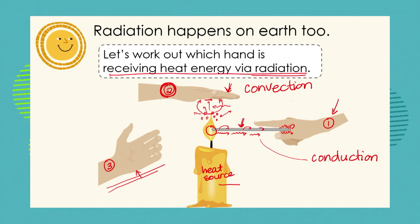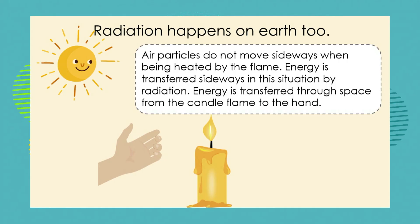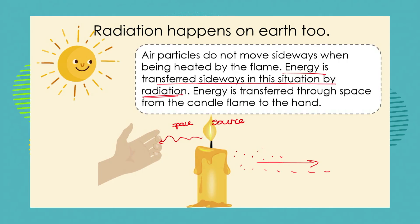Hand number three is to the side of the heat source — not above it and not touching it. Air particles don't move sideways when heated by the flame; they move upwards. So energy is transferred sideways by radiation. We have a source, we have space, and waves of heat energy are radiated out to the hand at the side of the candle. Energy is transferred through space from the candle flame to the hand via radiation.